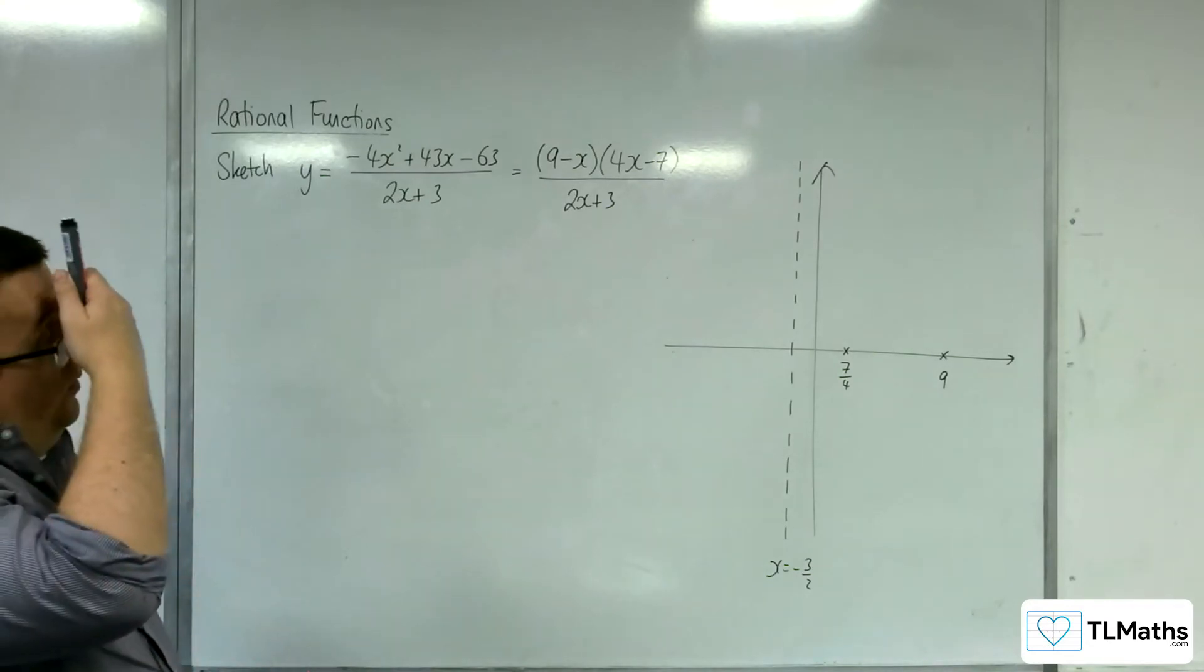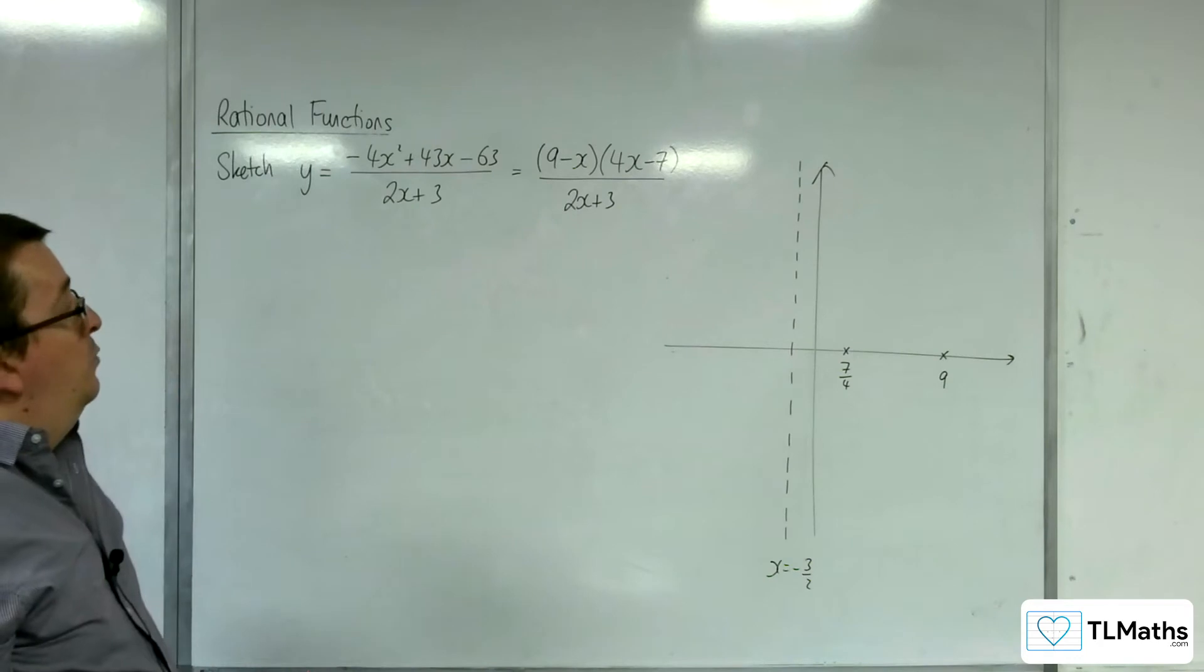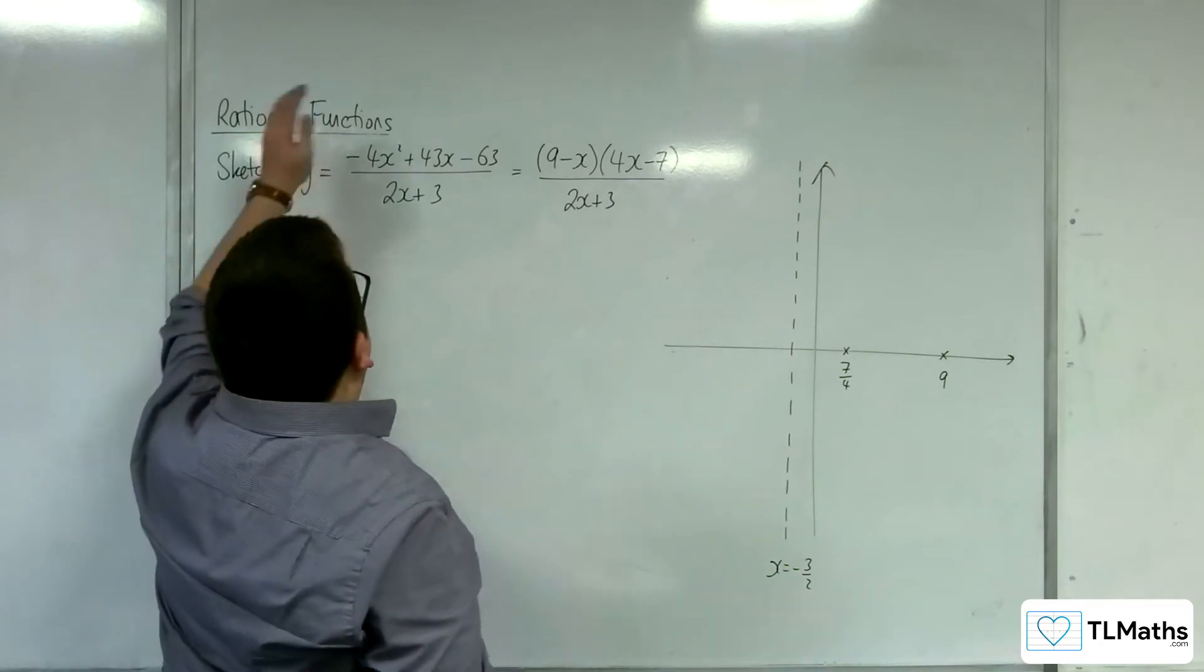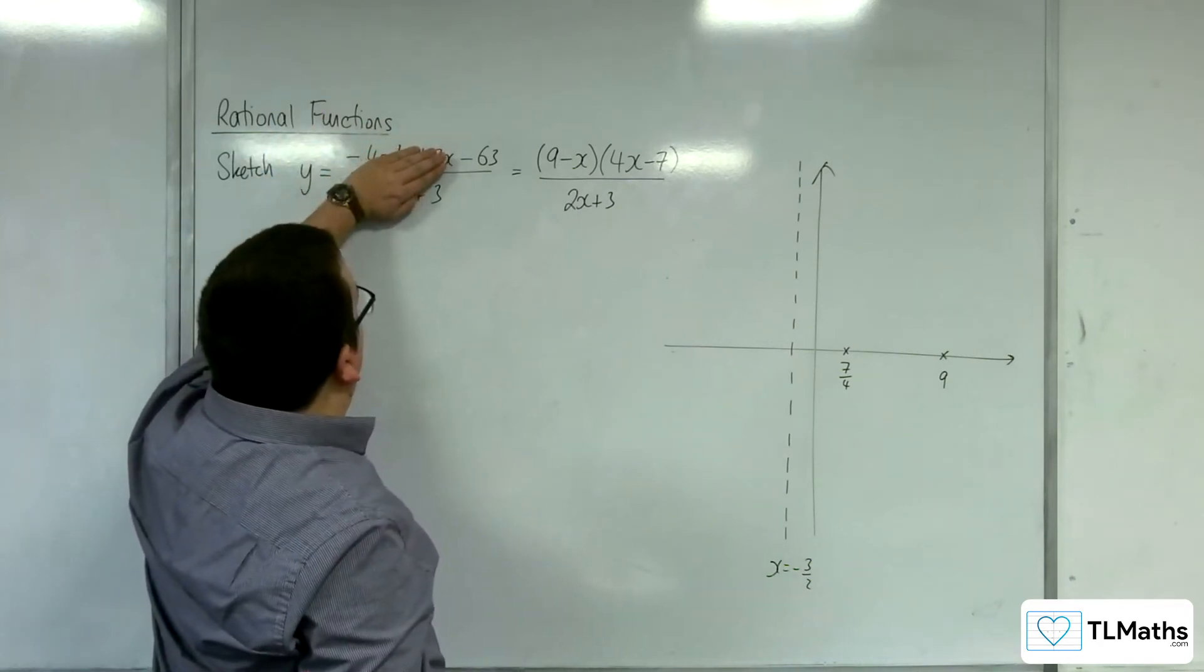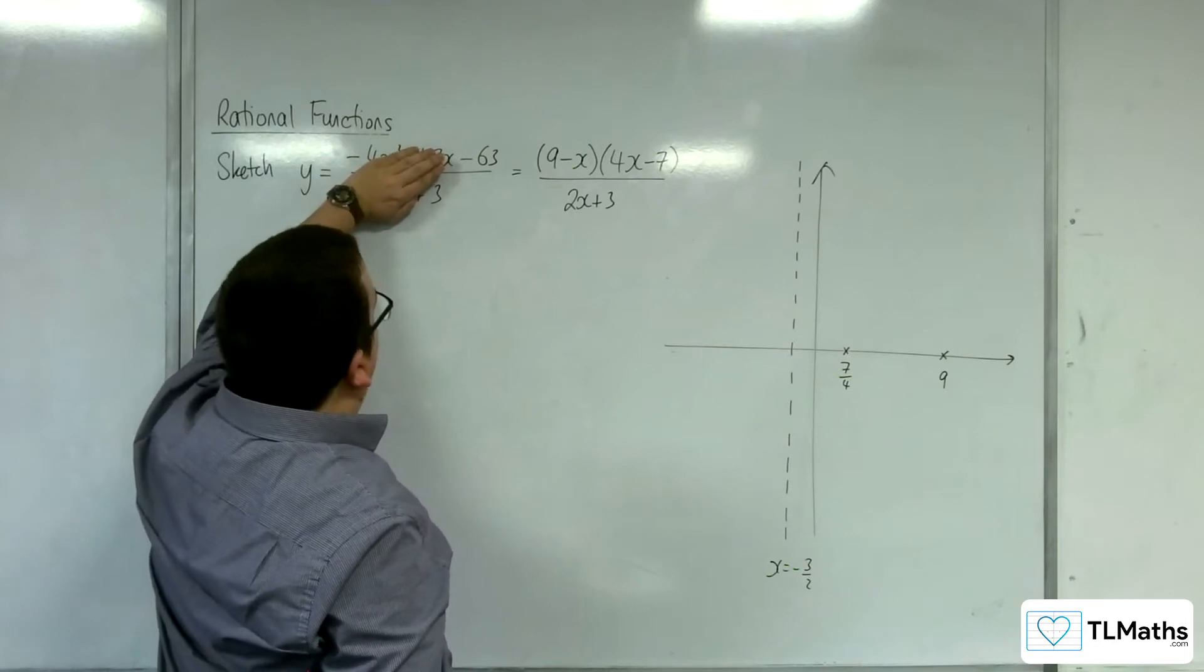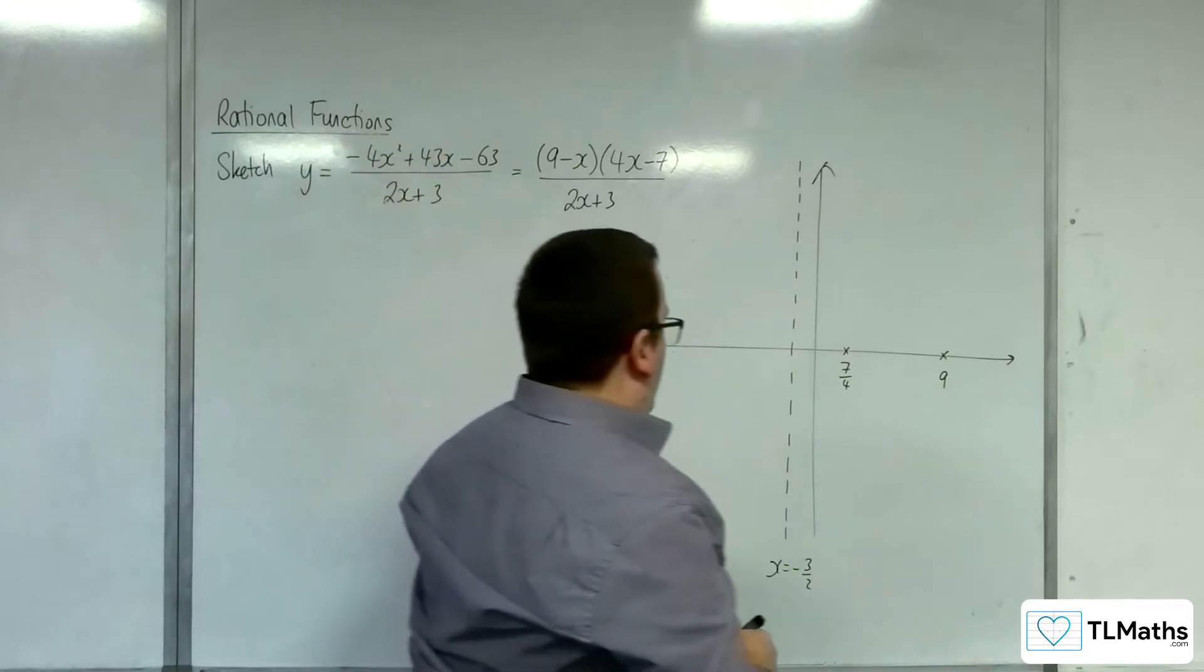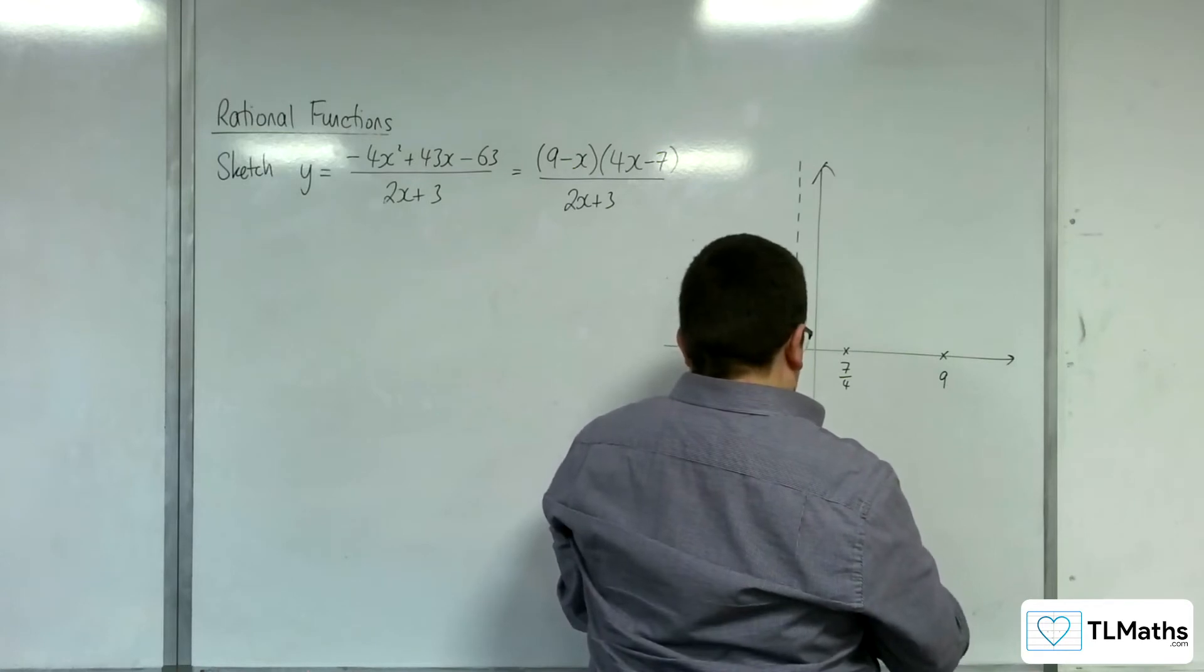Right, so how about the oblique asymptote? Oh, where it crosses the y-axis? Before I forget, that's when x is 0. So we get minus 63 over 3, which is minus 21. So I'll have to put minus 21 there.